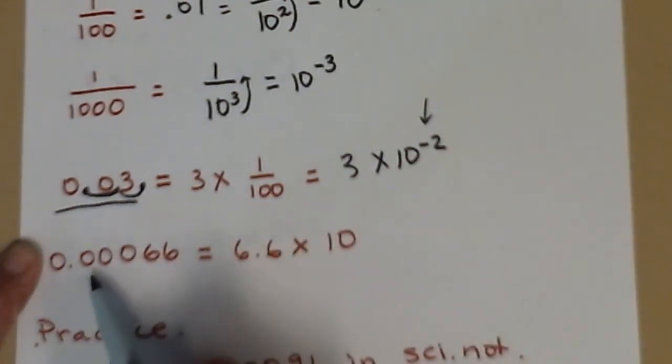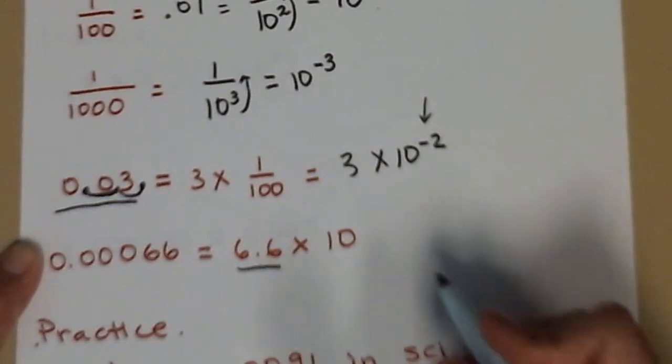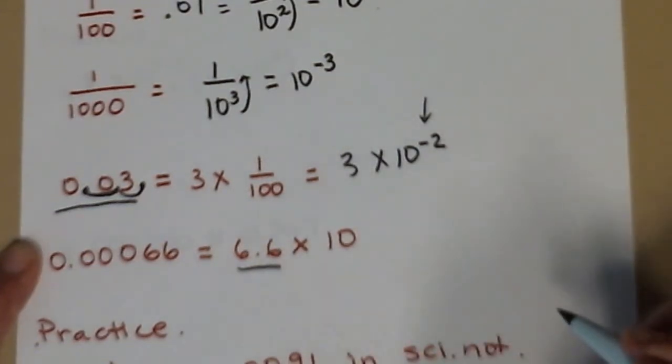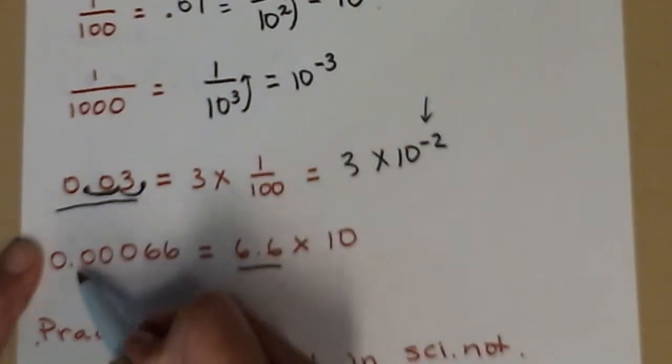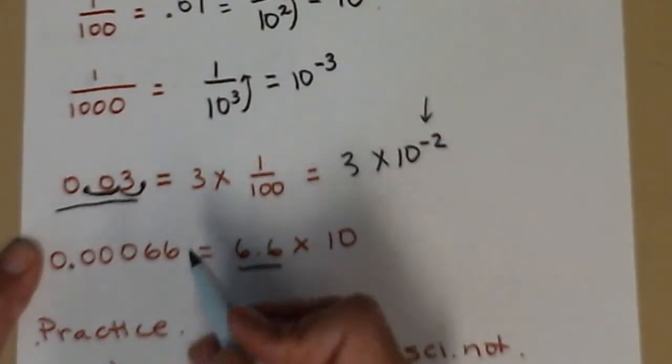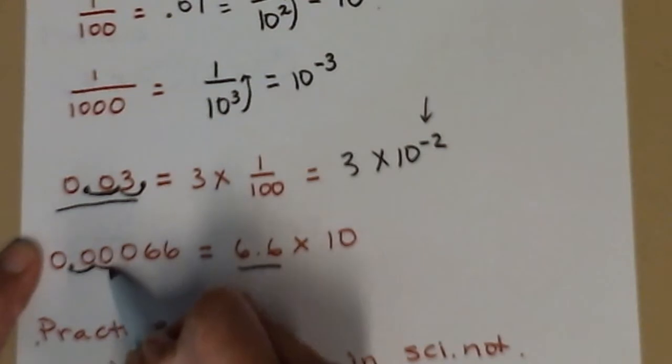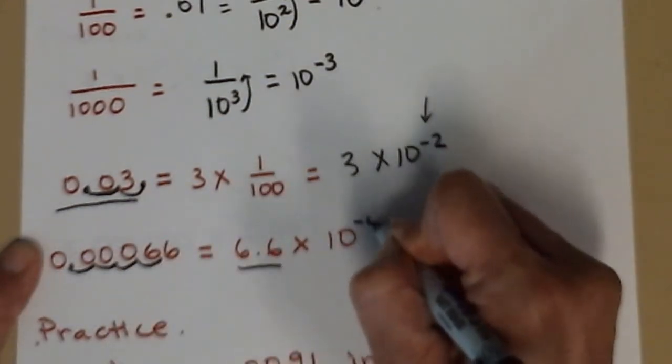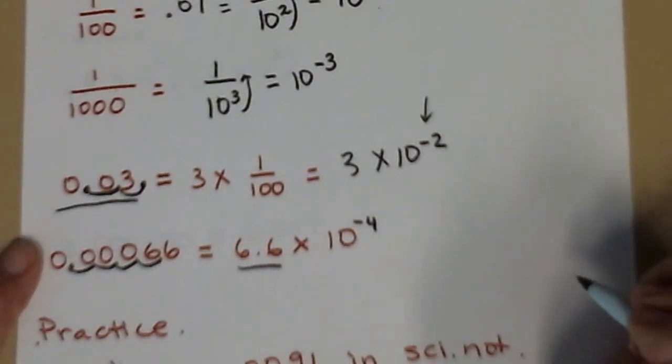So here, 0.0066. The number between 1 and 10 is 6.6. Now I have to come up with the power that goes on my 10. So swooping, starting here, I swoop 1, 2, 3, 4 swoops. Times 10 to the negative 4. This is the scientific notation version.